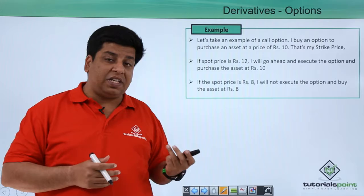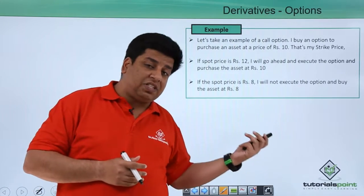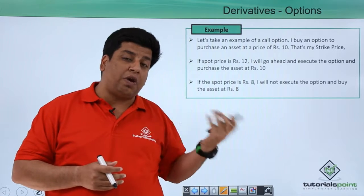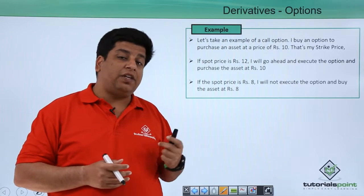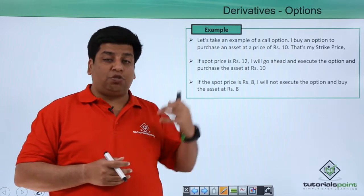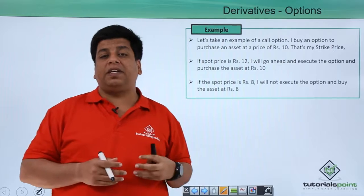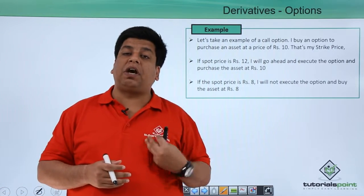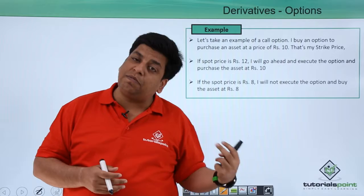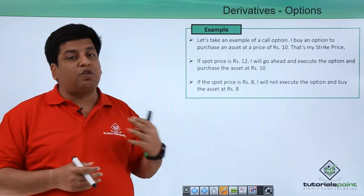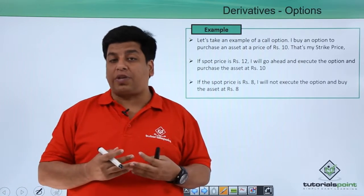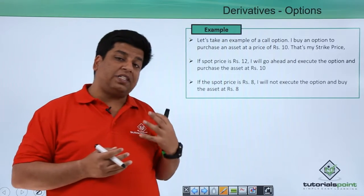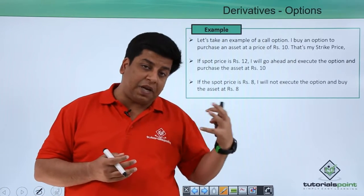Situation one: at the expiration date, if the price of the product is rupees 12, then instead of buying it at 12 rupees from the market, I can go ahead and buy the asset at my strike price of 10 rupees. That gives me a payoff of 2 rupees — it saves me 2 rupees. In that case, I will go ahead and execute the contract.